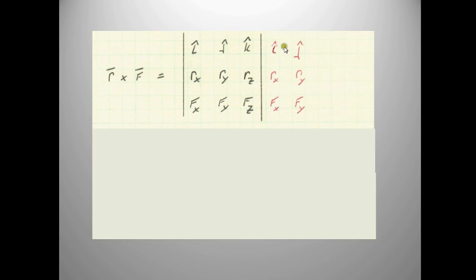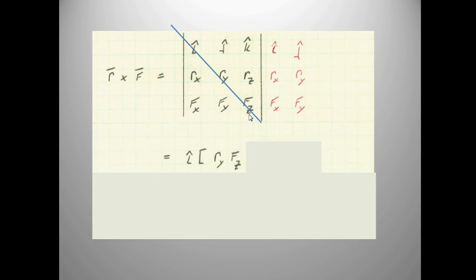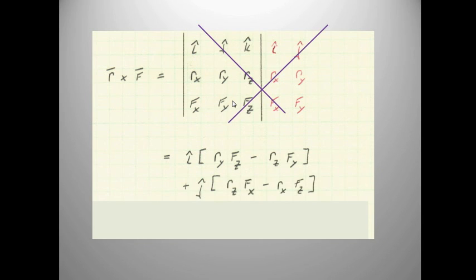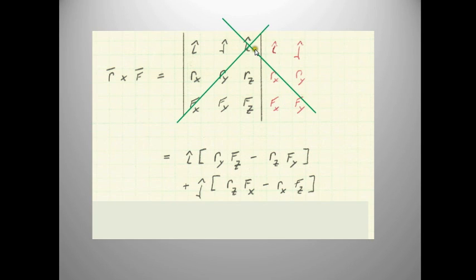A second way of calculating the cross product is the diagonal method. You start with two additional rows. To get the I component, you take the positive term ry times Fz, then the other diagonal in the other direction which is minus rz times Fy. For the J component it's rz times Fx minus rx times Fz, and lastly the K component is K times rx Fy minus ry Fx.